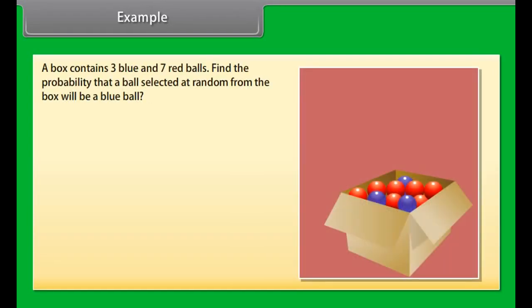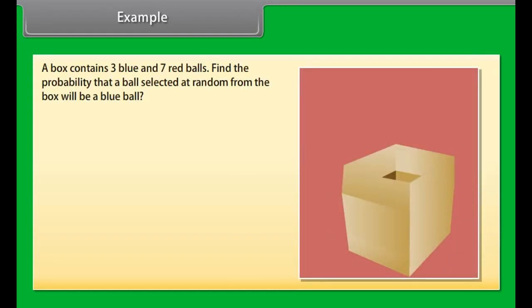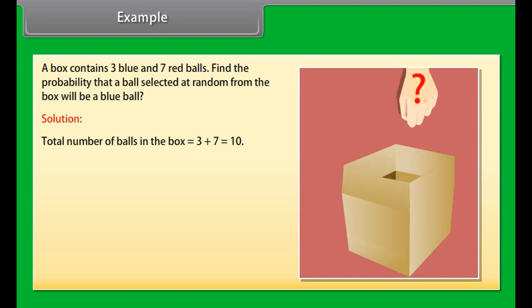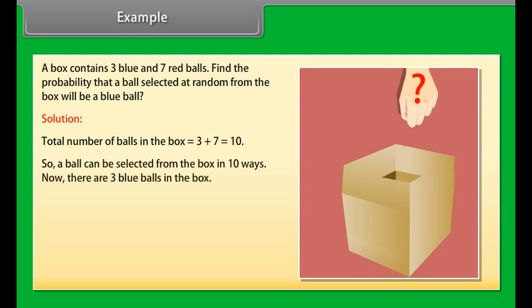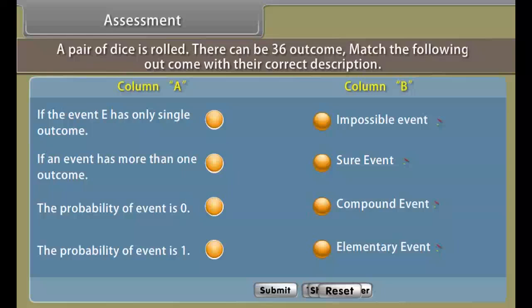A box contains 3 blue and 7 red balls. Find the probability that a ball selected at random from the box will be a blue ball. Solution: total number of balls in the box equals 3 plus 7 equals 10. So a ball can be selected in 10 ways. There are 3 blue balls in the box, so a blue ball can be selected in 3 ways. Hence, the required probability is 3 by 10.